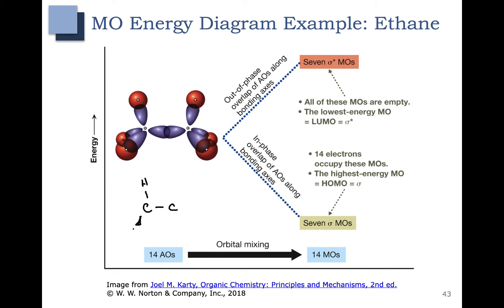Ethane has two sp3 hybridized carbons. In the case of ethane, we have 14 atomic orbitals that combine to form 14 molecular orbitals: 6 s orbitals, one for each of the hydrogens, and 8 sp3 hybrid orbitals, 4 for each of the carbons. 8 plus 6 is 14.